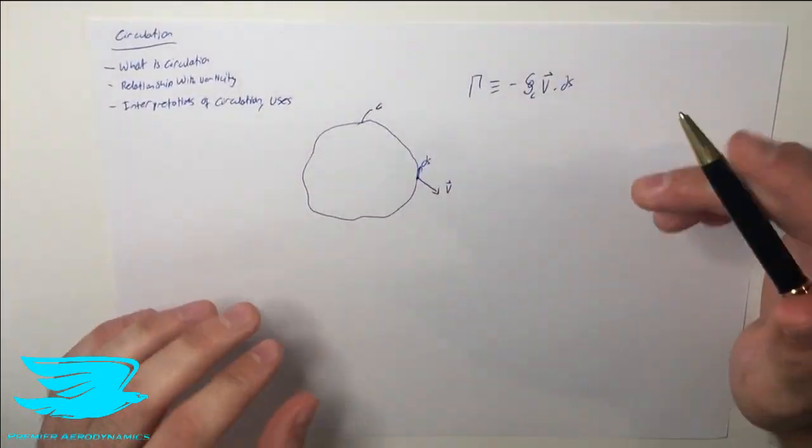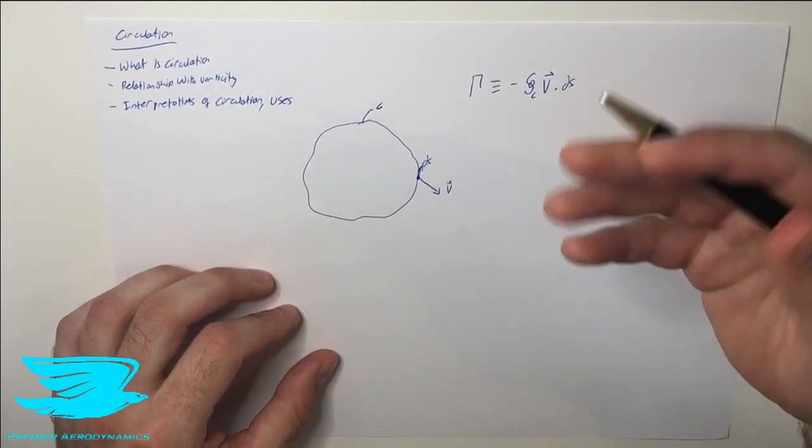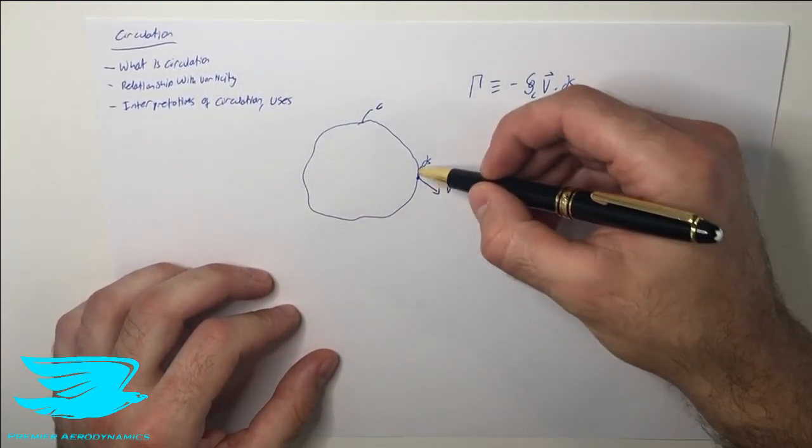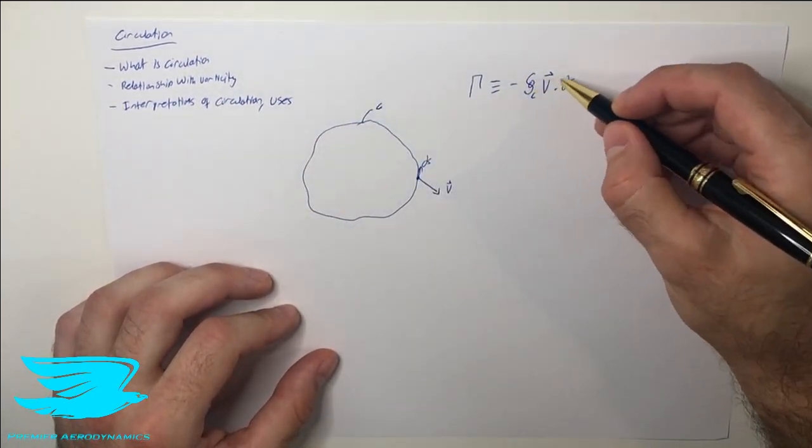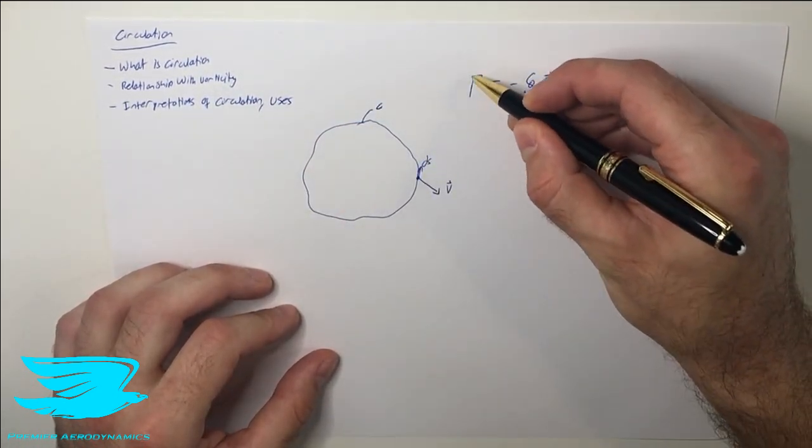So what does this mean? If we have the ds, we can specify that. And we know what the velocity vector is along this entire line, this closed loop integral. We can perform this equation here to find out what the circulation is.